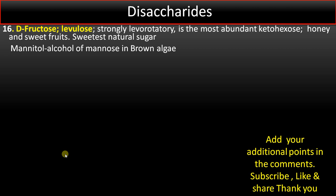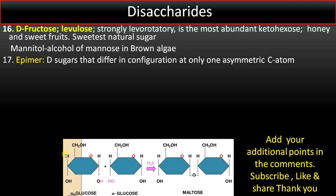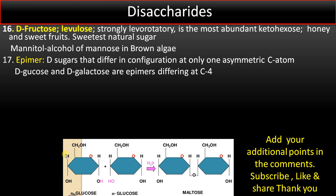Mannitol, the sugar alcohol of mannose, is a reserve food in brown algae. Point number seventeen: epimers are two sugars that differ in configuration at only one asymmetric carbon atom. D-glucose and D-galactose are epimers, differing at carbon position number four.